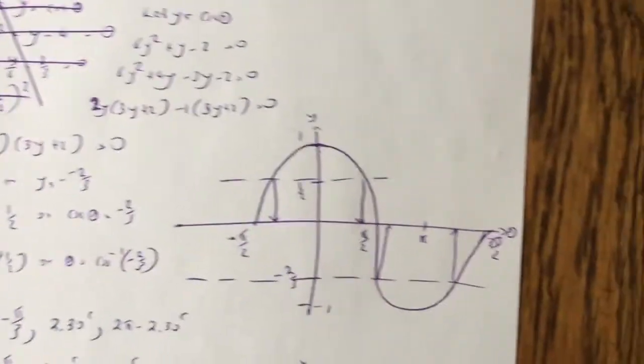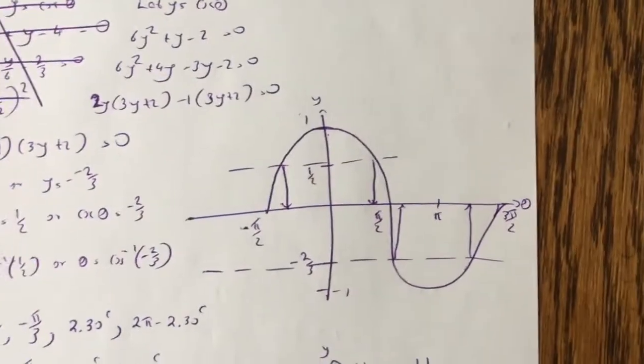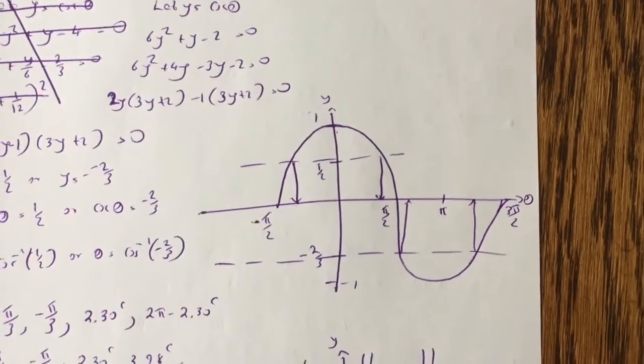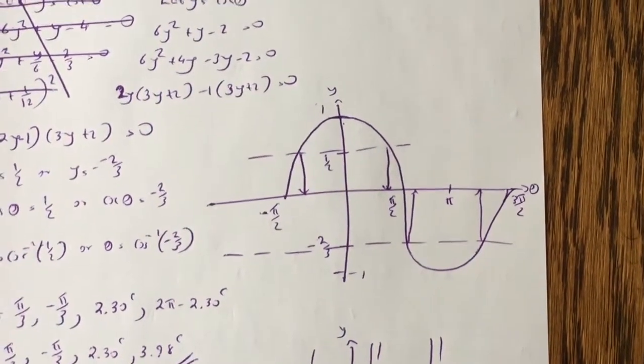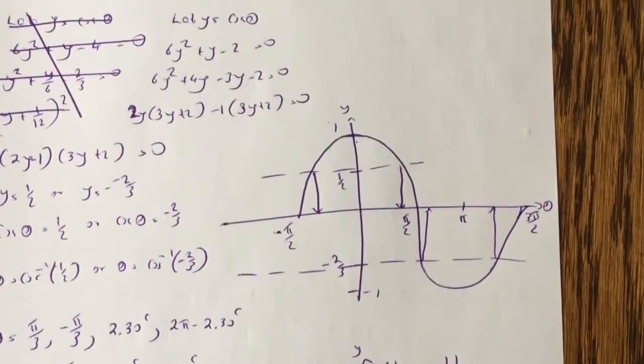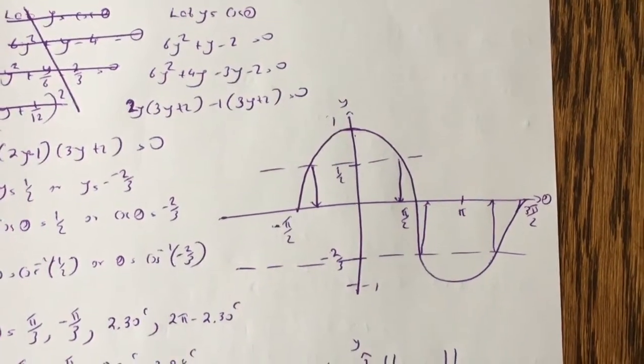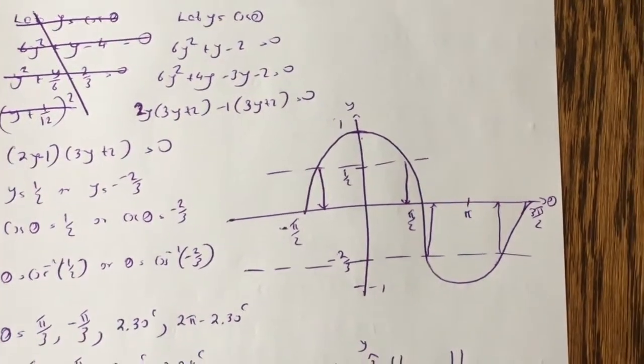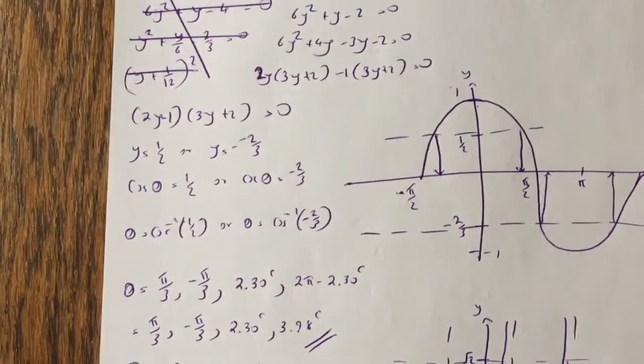And then I use the graph, like I told you in the previous videos. So here we go. I check where the cos graph is intersecting half, and cos graph is intersecting minus 2 thirds. Also notice that it's in radians, so I've drawn the graph with radians, from minus pi over 2 to 3 pi over 2.